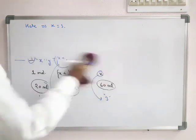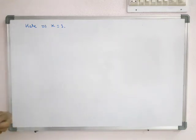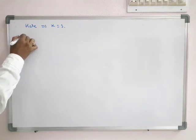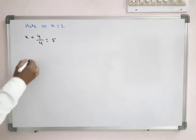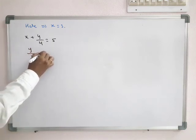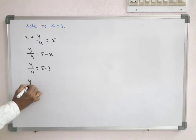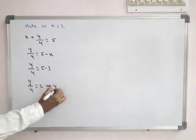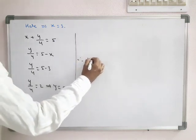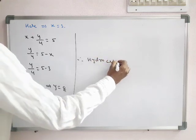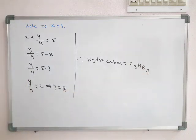Now, x + y/4 = 5. Since x = 3, we have y/4 = 5 − 3 = 2, so y = 8. Therefore the formula of the hydrocarbon is C₃H₈. These are known as idiometric calculations.